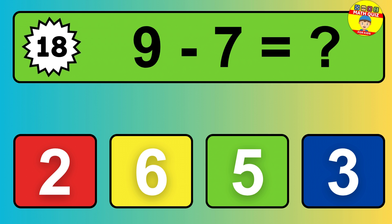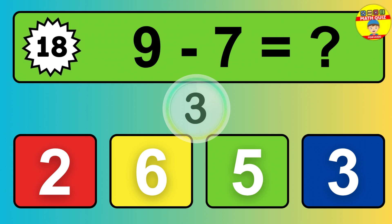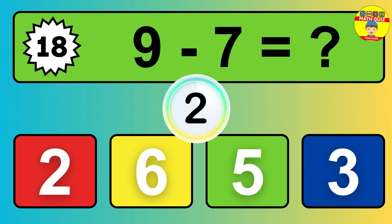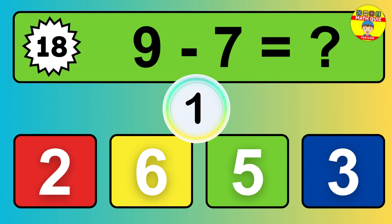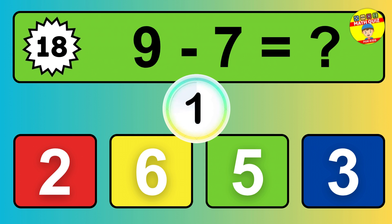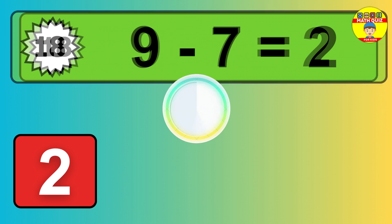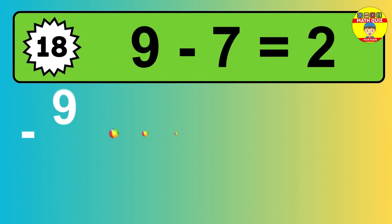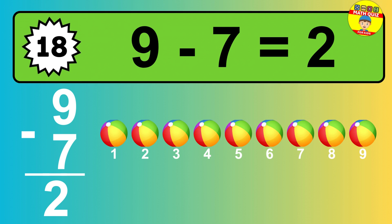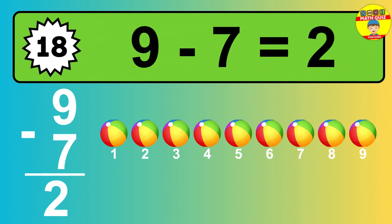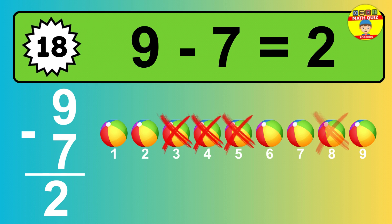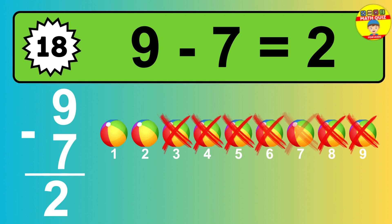Question eighteen: nine minus seven equals what? So the answer is, nine minus seven is two. Let's count it. One, two.